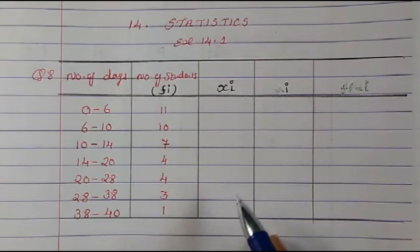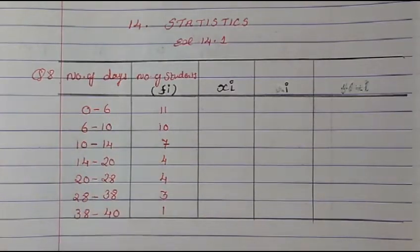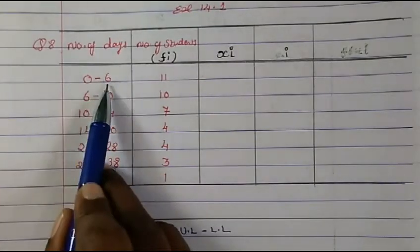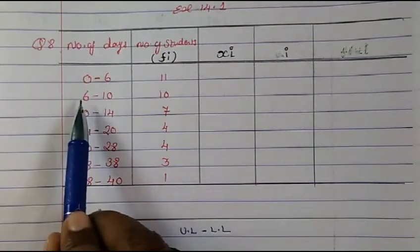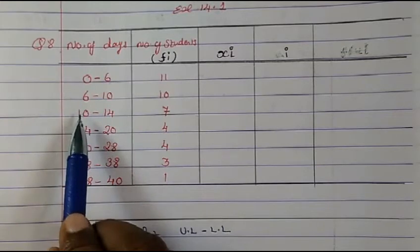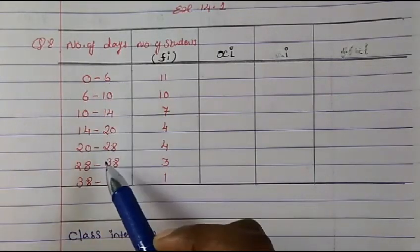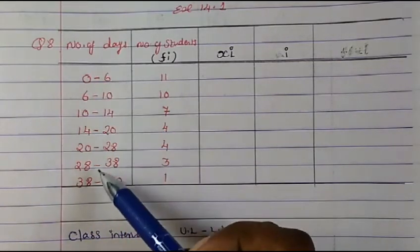Here, between 0 to 6 the class interval is 6. Class interval is found by upper limit minus lower limit. So 6 minus 0 is 6. Then 10 minus 6 is 4, 14 minus 10 is 4, 20 minus 14 is 6. So the class intervals are 6, 6, 4, 4, 4, 6 — they are not the same.